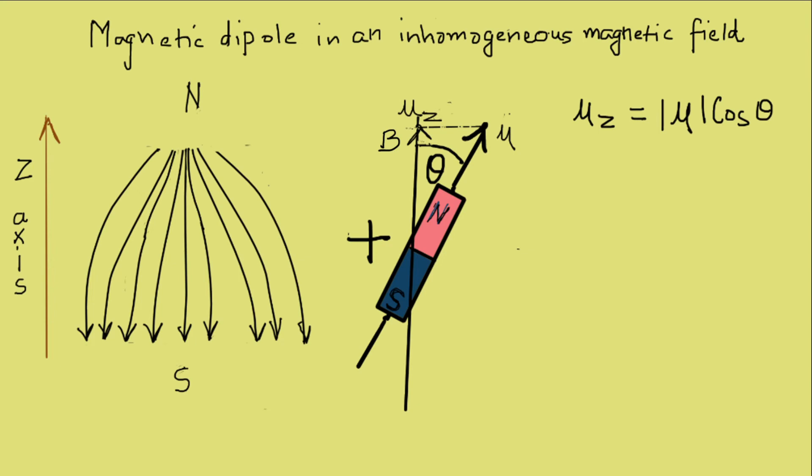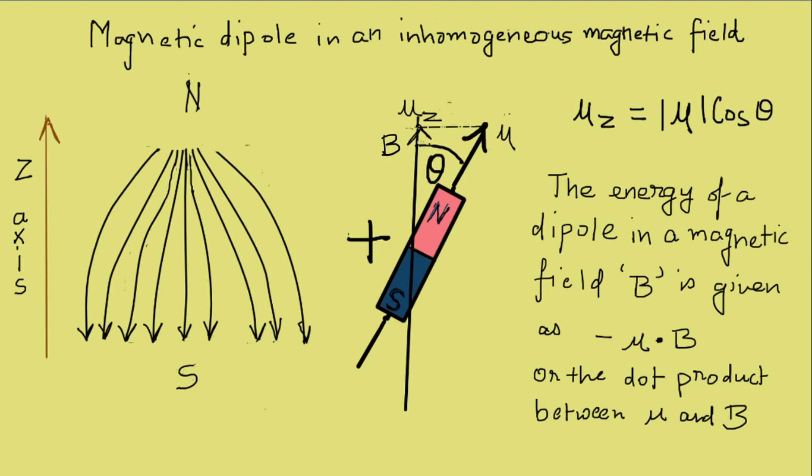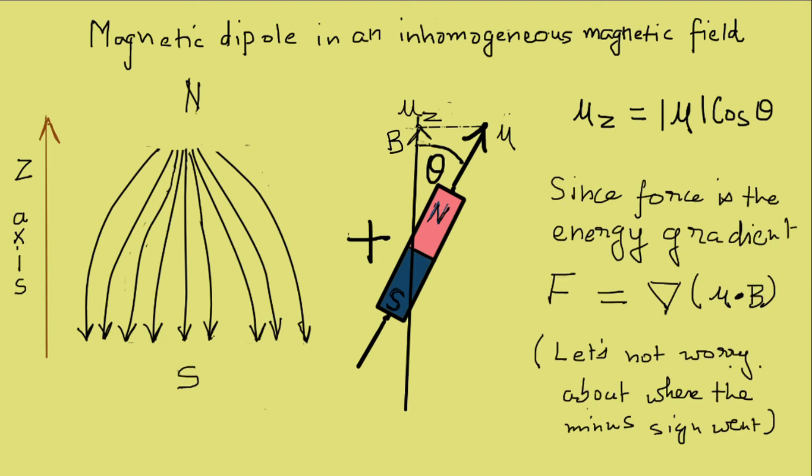Though in the diagram the magnetic dipole is shown outside the field, let us imagine that it sits within the inhomogeneous field making an angle theta with the magnetic field B. The energy of a magnetic dipole within any magnetic field, homogeneous and inhomogeneous, is given by minus mu dot B. Since we are only examining one component of mu along the z axis, we have mu_z equals mu cos theta. The force exerted on the dipole is F equals del mu dot B.